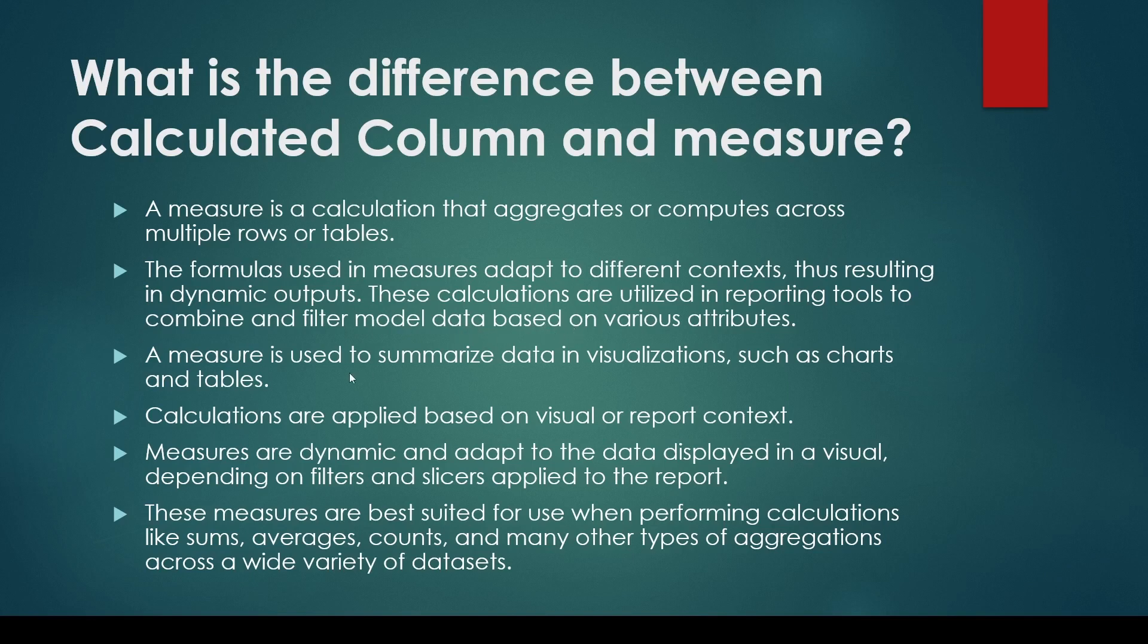A measure is used to summarize data in visualizations such as charts and tables. When I use a measure, it's an explicit measure. But when I use sum, min, max, it is actually creating an implicit measure. I'm not declaring a measure, but it is a measure when I use some kind of aggregation. It's not summarized originally, but when I'm summarizing it is actually a measure. Most of the visualizations, other than group by or not summarized values, have grouped or aggregated values - those values are something which is basically a measure.